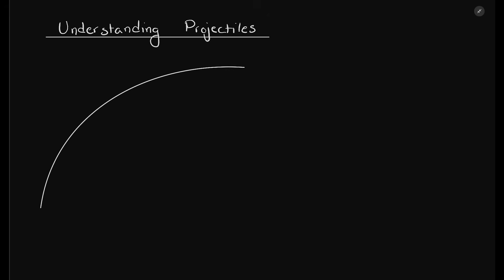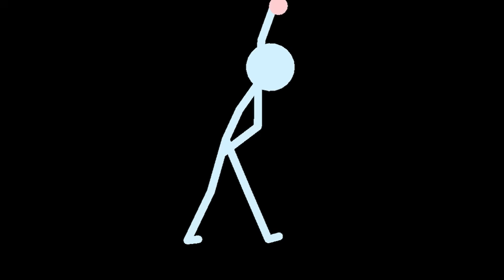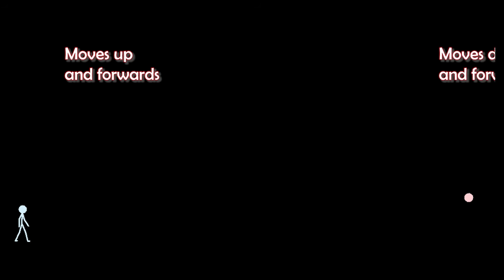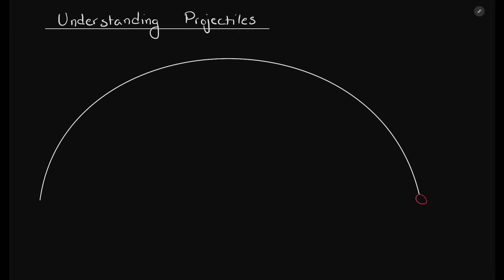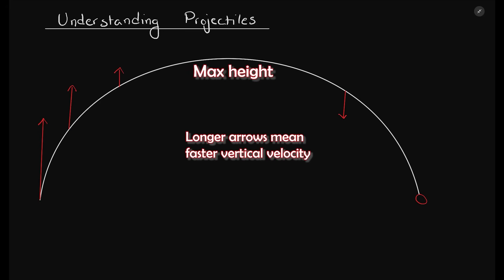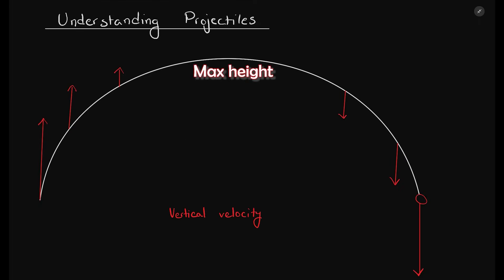Let's understand what projectile motion is. If you throw a ball to someone standing in front of you, the ball will rise up and then move forward, and after a while will fall back and the person will catch it. This curved pathway is called projectile motion. At the beginning of the ball's journey, the ball moves high up. As the ball is moving against gravity, the vertical velocity decreases. After reaching its maximum height, the ball starts falling back to the ground and its vertical velocity starts to increase.